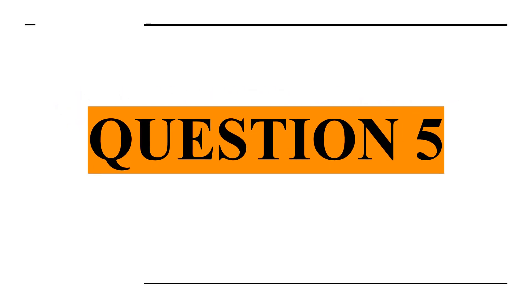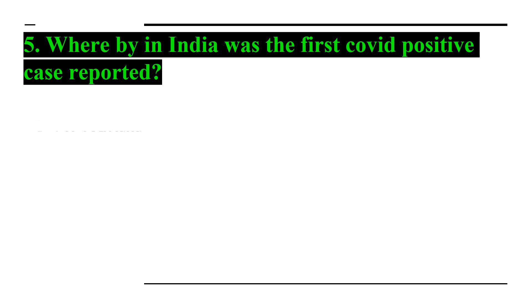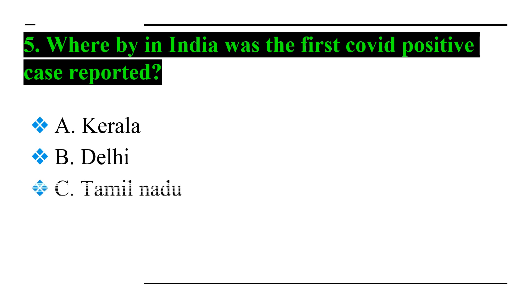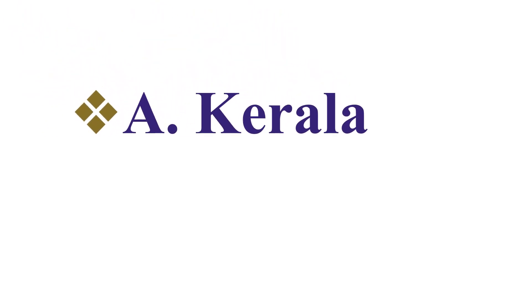Question number five: whereby in India was the first COVID-positive case reported? Option A: Kerala, Option B: Delhi, Option C: Tamil Nadu, and Option D: Andhra Pradesh. Answer number five: Option A — Kerala.